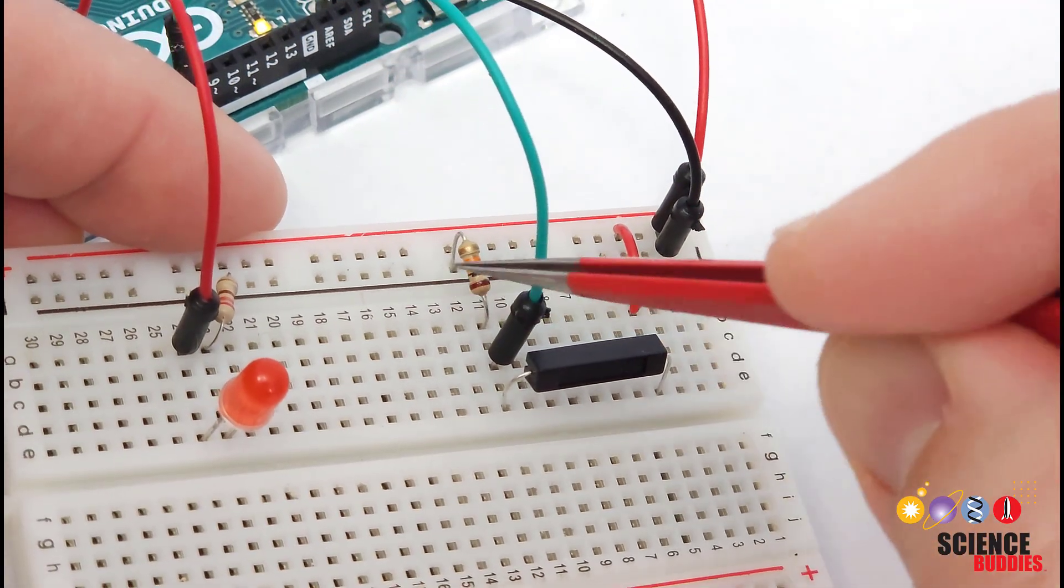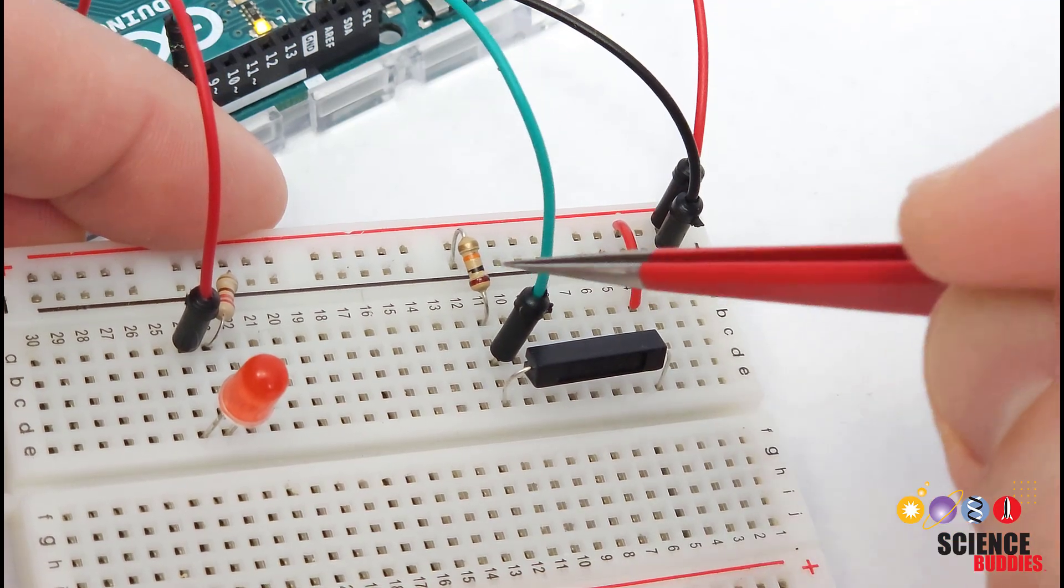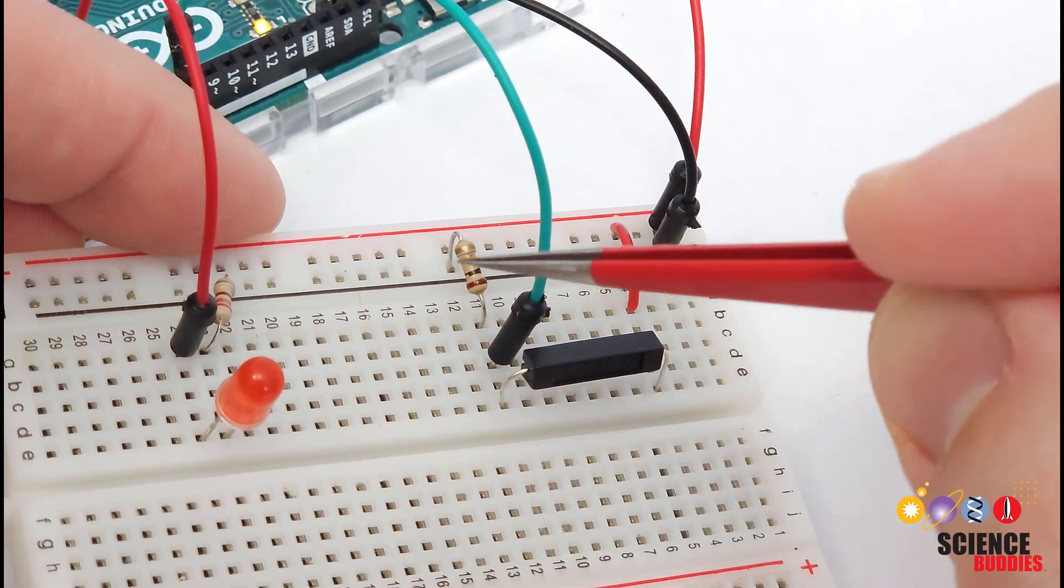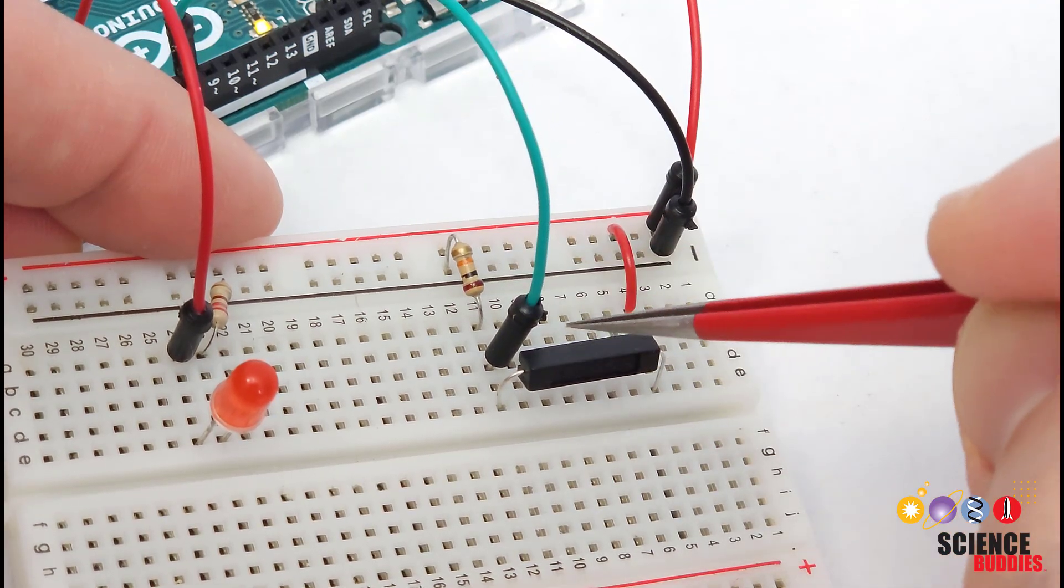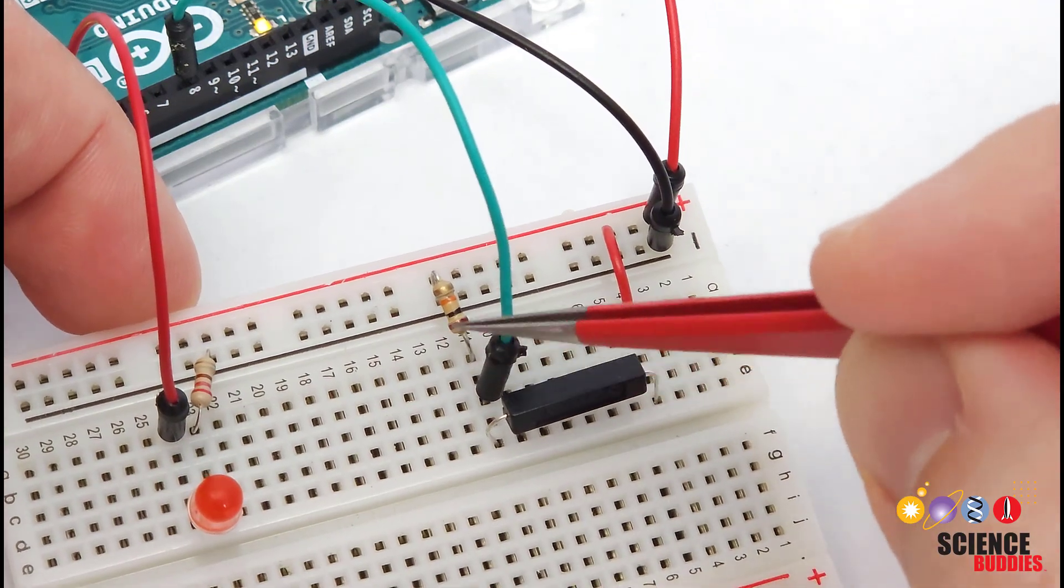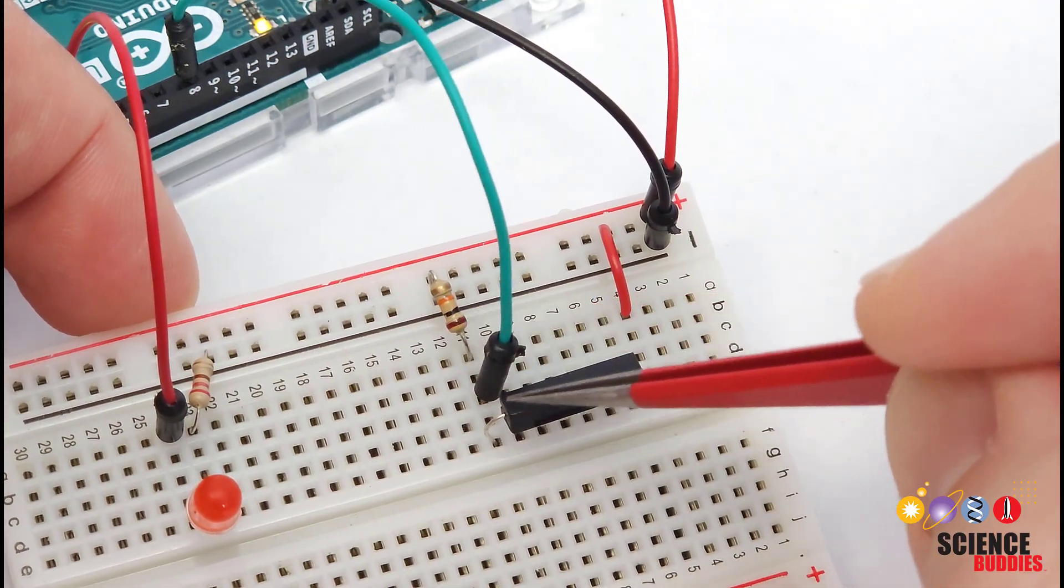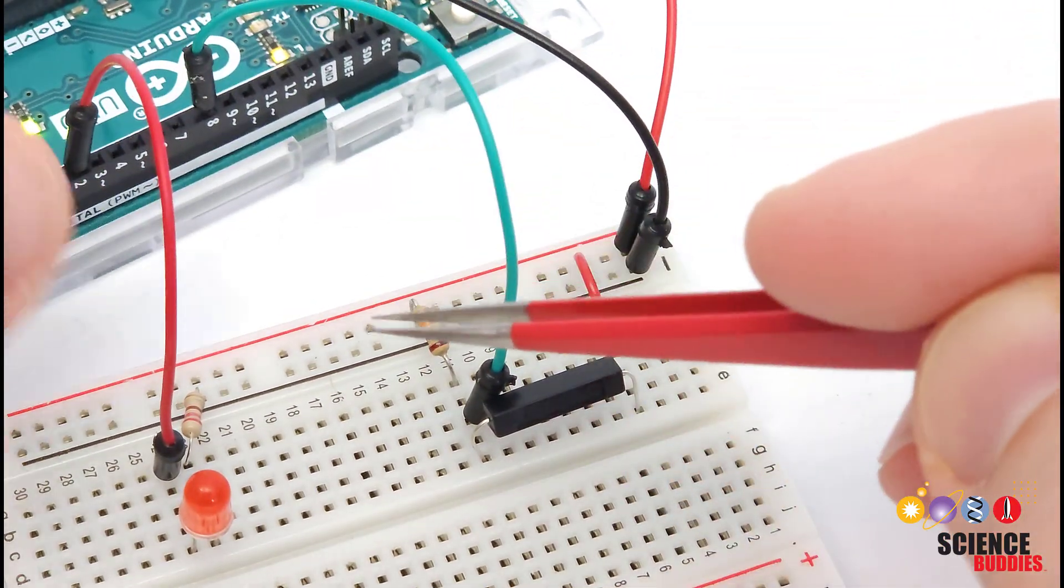The other pin is connected to ground through an external 10 kilo ohm pull down resistor. If you go back and watch our video about buttons, you will get an explanation for why that external resistor is needed with a switch like this. And then we have the middle pin, so between the resistor and the switch here connected to digital pin 8 on the Arduino.